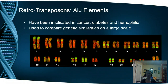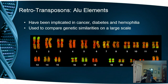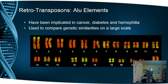Another example of retrotransposons is the ALU elements, which have been implicated in cancer, diabetes, and hemophilia. Unlike L1, the ALU element does not code for its own reverse transcriptase — it is entirely reliant on the cell's enzymes to help it move. One thing we can do with ALU elements is compare genetic similarities, looking to see if people have ALUs in specific genes to compare how genetically similar they are. In lab this semester, you'll perform PCR on your own DNA to find out if you have an ALU element at a specific location on chromosome 16 — one of the ways we can compare lineages.